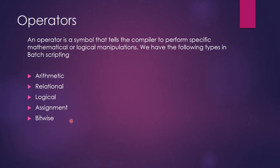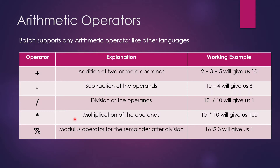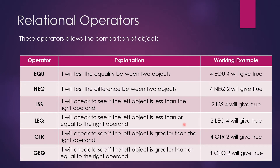Let's talk about arithmetic first. Any batch operation that consists of arithmetic operators should have plus, minus, division, multiplication, and modulus. Addition of two or more operands: 2 plus 3 plus 5 gives us 10. Subtraction: 10 minus 4 gives us 6. Division: 10 divided by 10 gives us 1. Multiplication: 10 into 10 gives us 100. Modulus is the remainder after division — for example, 16 divided by 3: 3 fives are 15, remainder is 1.